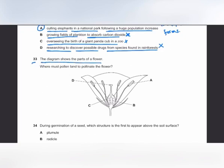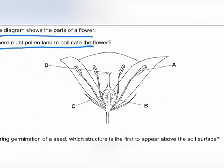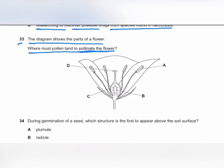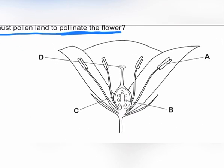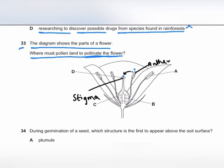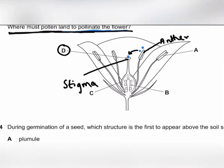MCQ number 33: where must pollen land to pollinate a flower? Pollination is the transfer of pollen from anther to stigma. The pollen comes from the anther and must land on the stigma. The answer is D — the stigma.